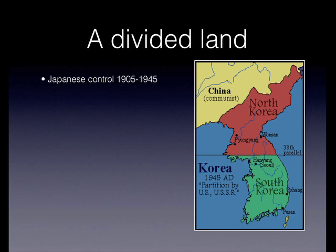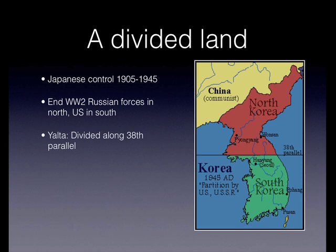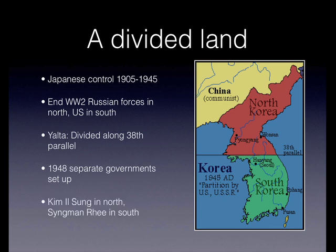The Japanese had effectively controlled the Korean Peninsula from 1905 up to the defeat of Imperial Japan at the end of the Second World War in 1945. At the end of the war, Russian military forces were in the north of the country, north of the 38th parallel, and US military forces were in the south. At the Yalta Conference, the country was divided along the 38th parallel. This division became more formalised when in 1948 separate governments were set up. In the north, Kim Il-sung took power in communist North Korea, and Syngman Rhee won some disputed elections in the south. Both were nationalists and both advocated reunification of the Korean Peninsula.